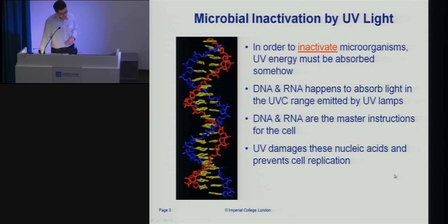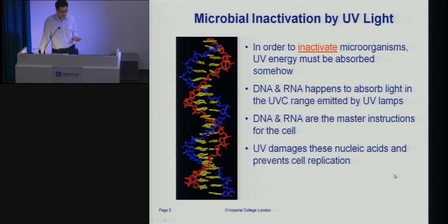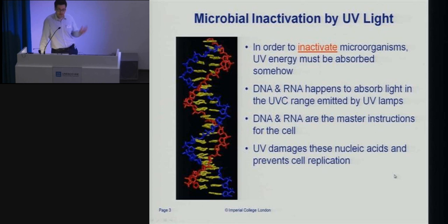In order for organisms to be inactivated, the energy supplied by the UV somehow has to be absorbed. It just so happens that DNA and RNA, which are the important master instructions of all biological cells, absorb pretty heavily in the UVC range. The idea behind UV disinfection really is: if we can damage these key nucleic acids within cells — the DNA or RNA — then even if the organism isn't dead, it's not able to replicate itself anymore because it has damage in its key master instructions.